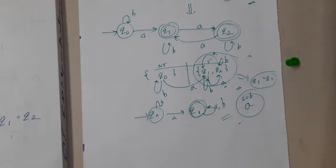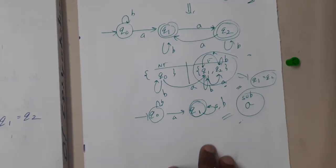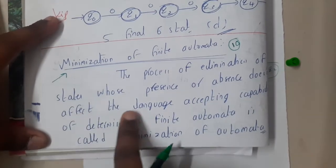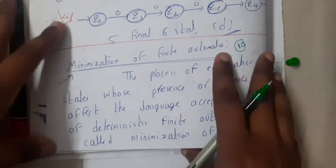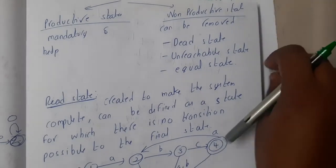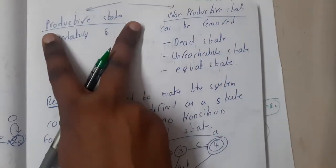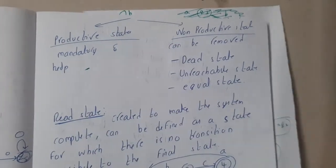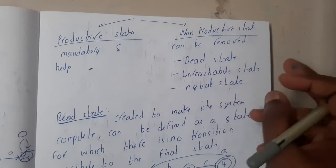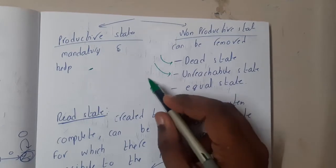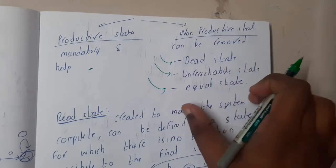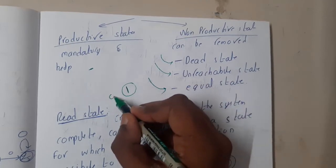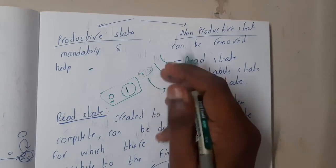The process of eliminating states whose presence or absence does not affect the language-accepting capability of a DFA is called minimization of DFA. There are two types: productive states, which are mandatory states that are needed, and non-productive states, which can be removed. Non-productive states include dead states, unreachable states, and equal states. If there is more than one dead state in a DFA, combine them all into a single one — at most one dead state is allowed.